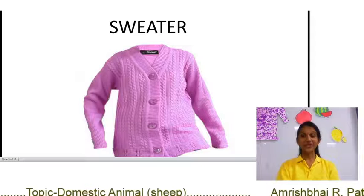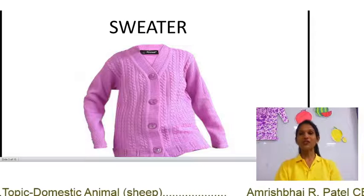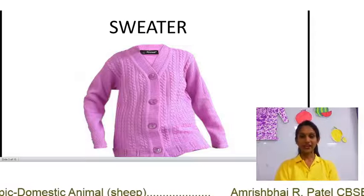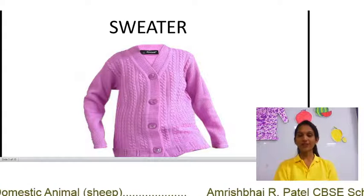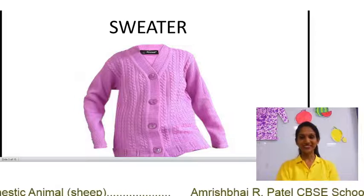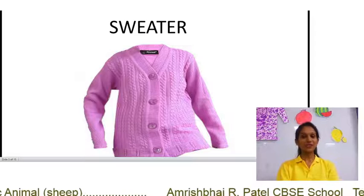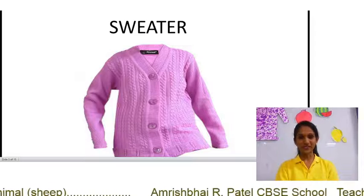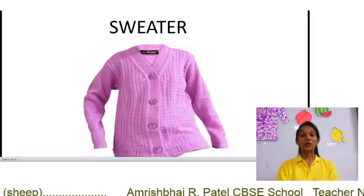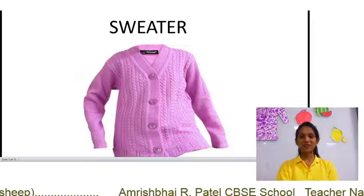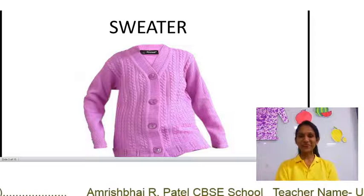So sheep is useful for us, because from sheep we can get wool, and from wool we can make a sweater. Sheep is helpful for us, that's why we call it a domestic animal. Sheep is our domestic animal.